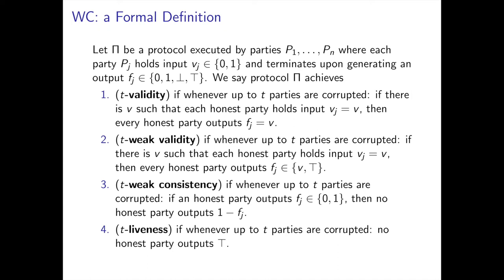To discuss our construction, I first introduce a different agreement primitive sometimes known as crusader's agreement, but mostly called lately weak consensus. Weak consensus primitives are very similar to Byzantine Agreement but have a relaxed consistency property: instead of requiring all honest parties to output the same value, we only require that parties do not output contradicting bits. If the output set is enlarged to include ⊤ (top) and ⊥ (bottom), this property becomes strictly weaker than normal consistency.